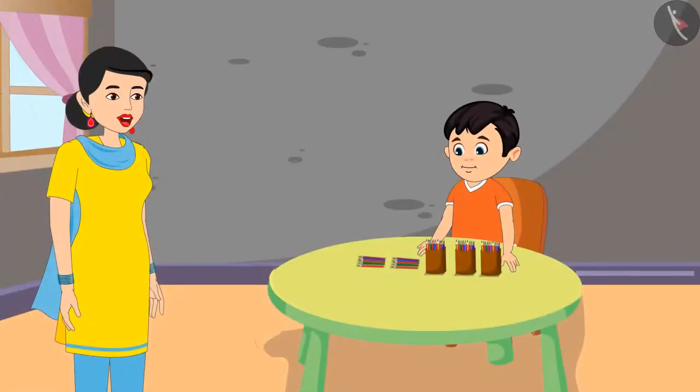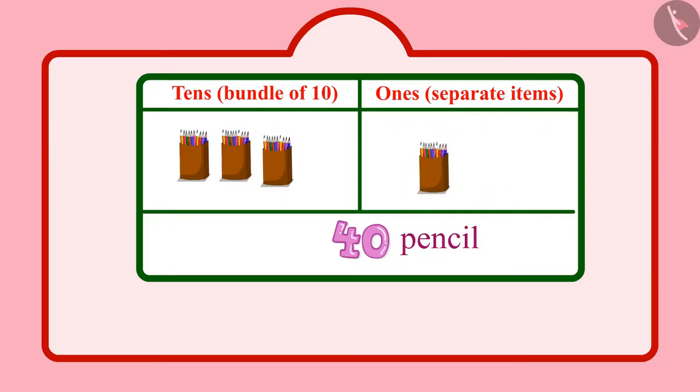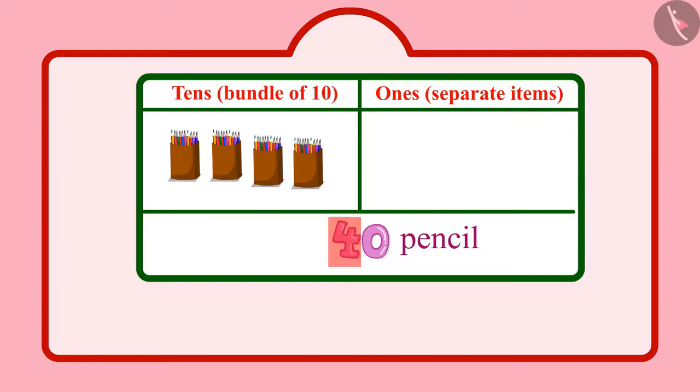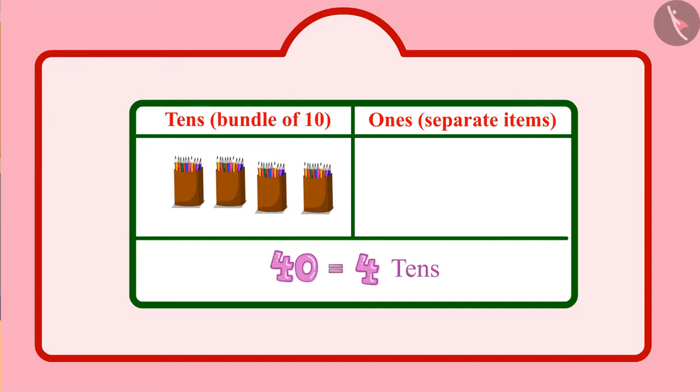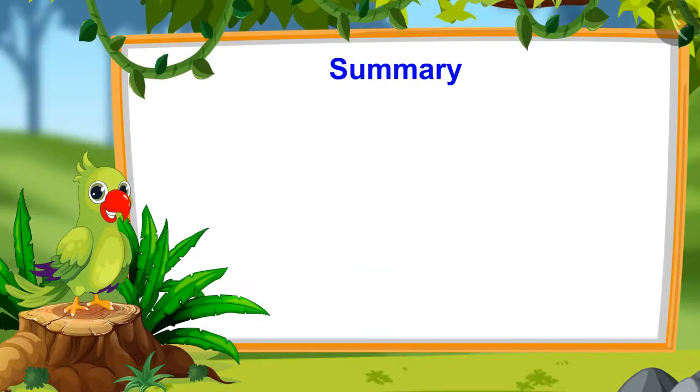Yes, Chotu, you are right. How many tenths do you have now? Mummy, 40 pencils meaning I have 4 tenths. Isn't it, mummy? And units? Mummy, there are no units in 40. Yes, Chotu, there are only 4 tenths in 40 and 0 units.